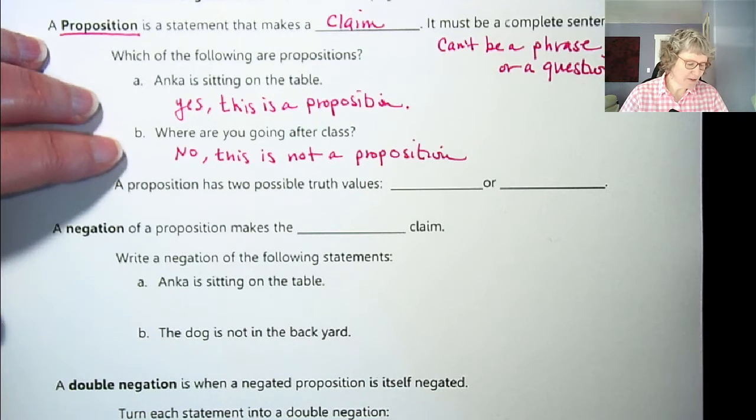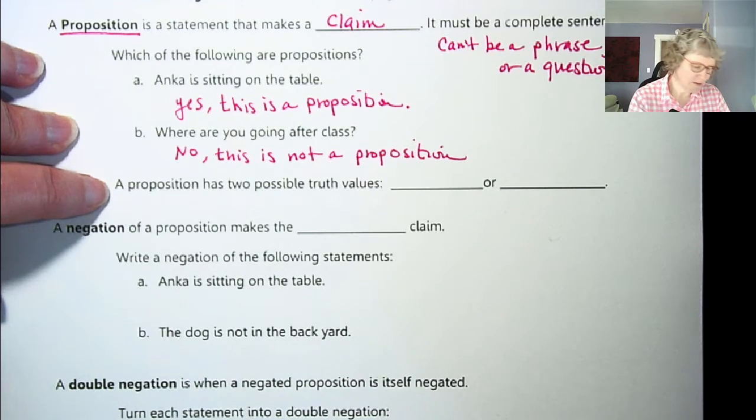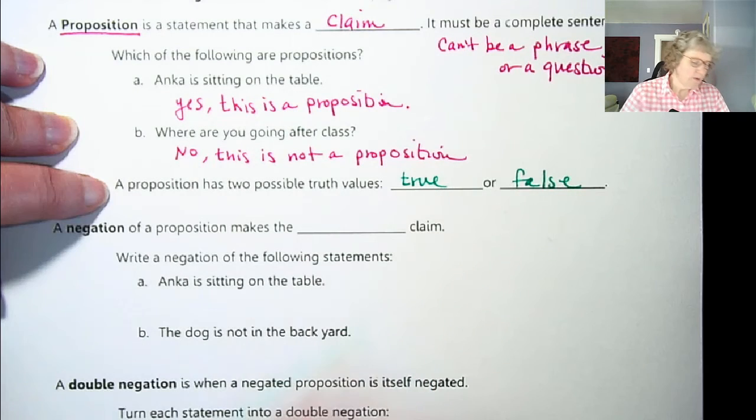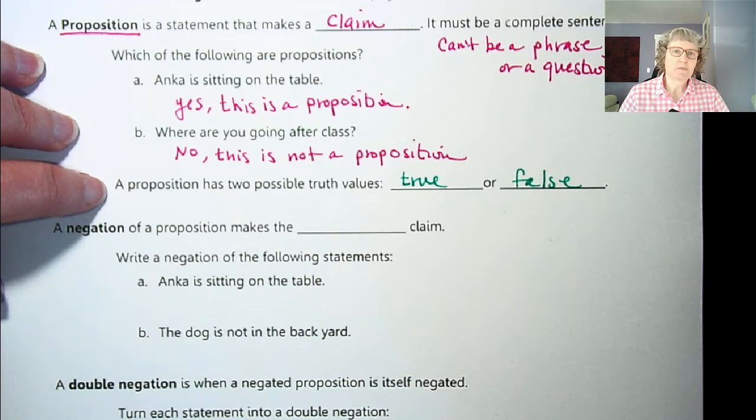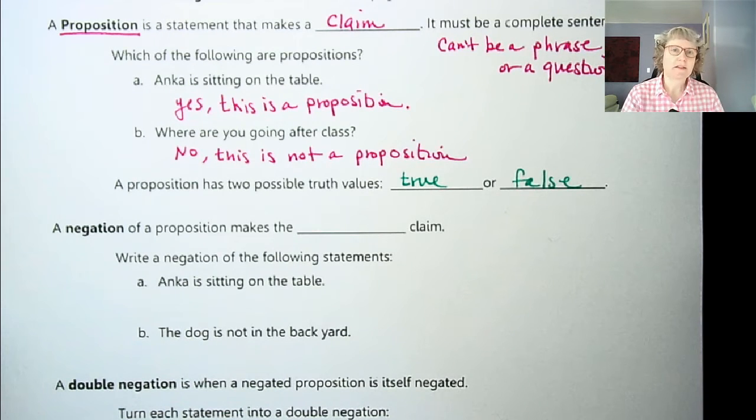So as I kind of alluded to, a proposition has two possible truth values: it could be true or false. So we could have a false claim, right? There's nothing saying that a proposition has to be true, but we would want to identify often whether things are true or false. So that's kind of just one statement. And then we're going to be doing more things to the statements, putting them together, even making arguments out of them.